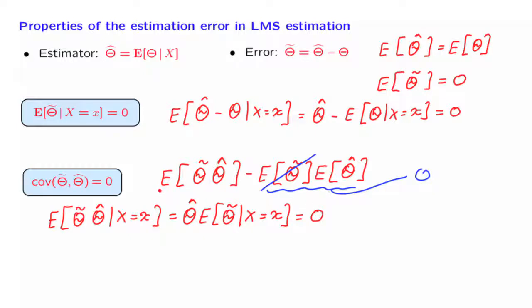Now, the expected value of a random variable is the same as the expected value of the conditional expectation. This is, again, the law of iterated expectations. Since the conditional expectation is 0, when we apply the law of iterated expectations to this quantity, we also obtain a 0. Therefore, this term is 0 as well, and we have established what we wanted to show.